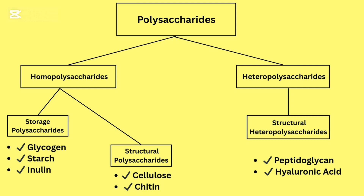There are two major types of polysaccharides. One: homopolysaccharides, made of only one type of monosaccharide. These are further divided into alpha storage polysaccharides for energy storage — glycogen (found in animals), starch (found in plants), and inulin (found in certain plants) — and structural polysaccharides for support and rigidity — cellulose (plant cell walls) and chitin (exoskeleton of insects and fungi cell walls). Two: heteropolysaccharides, made of two or more types of monosaccharides, including structural types like peptidoglycan (bacterial cell walls) and hyaluronic acid (cartilage and connective tissues).